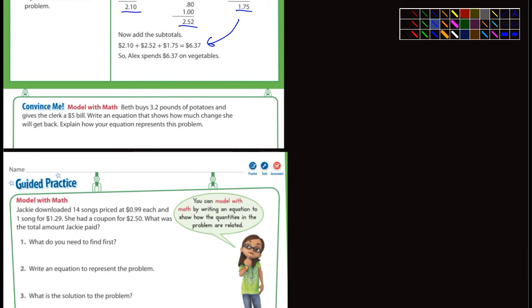It says Beth buys 3.2 pounds of potatoes and gives the clerk a $5 bill. Write an equation that shows how much money she will get back. I'm not worried about you explaining anything as far as this problem. But I will say this: let's say C represents the change she gets back, because that's what we're trying to figure out.